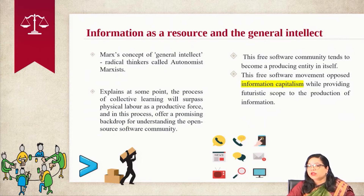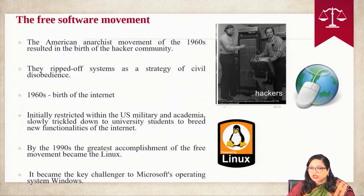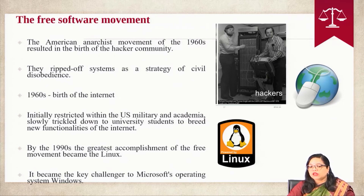Marx's concept of general intellect has been explored by a contemporary school of radical thinkers called the Autonomist Marxists. It explains that at some point the process of collective learning will surpass physical labor as a productive force, and in this process offers a promising backdrop for understanding the open source software and the free software community. This free software community tends to become a producing entity itself. Additionally, when the free software movement is considered, its origin also seems to be a relevant point of discussion.